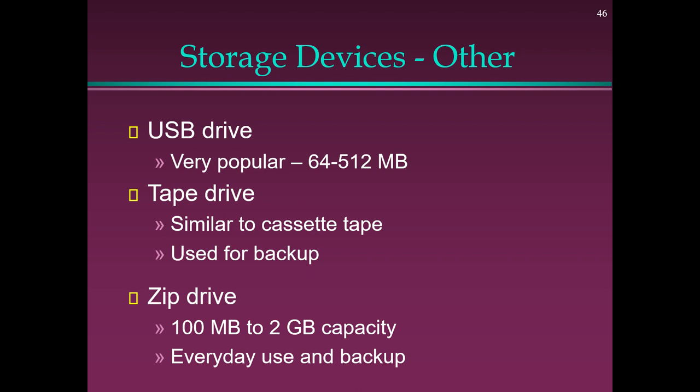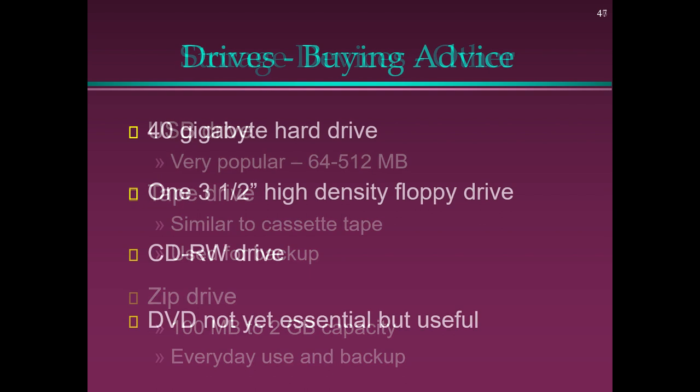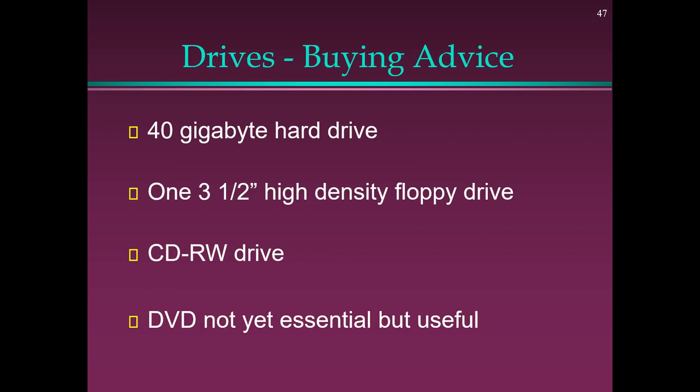Other Storage Devices: USB drive — very popular, 64 MB to 512 MB. Tape drive — similar to cassette tape, used for backup. Zip drive — 100 MB to 2 GB capacity, for everyday use and backup. Drives Buying Advice: 40 GB hard drive, one 3.5-inch high-density floppy drive, a CD-Rewritable drive; DVD not yet essential but useful.